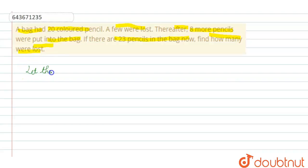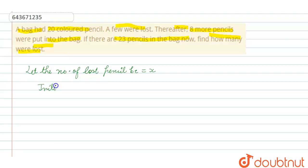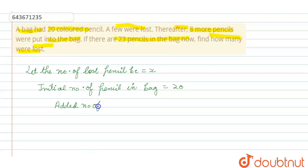Let the number of lost pencils be x. So, the initial number of pencils in the bag is 20. The added number of pencils is 8.